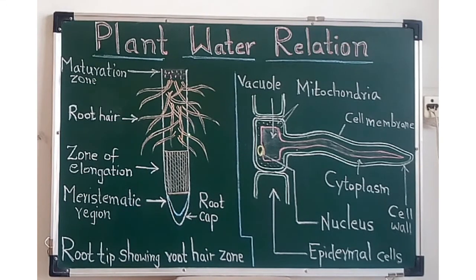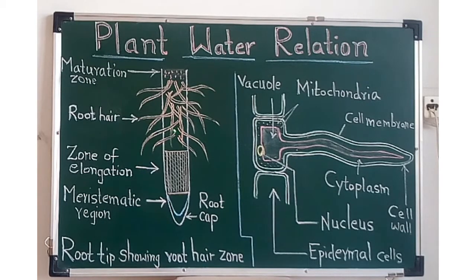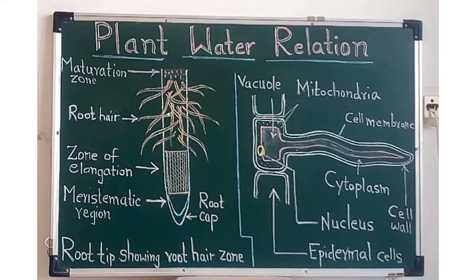In the region of root hairs, a large number of root hairs can be seen. These root hairs are short-lived, also called ephemeral, and are replaced every 10 to 15 days by new root hairs. This region is responsible for absorption of water and is also called the region of absorption.